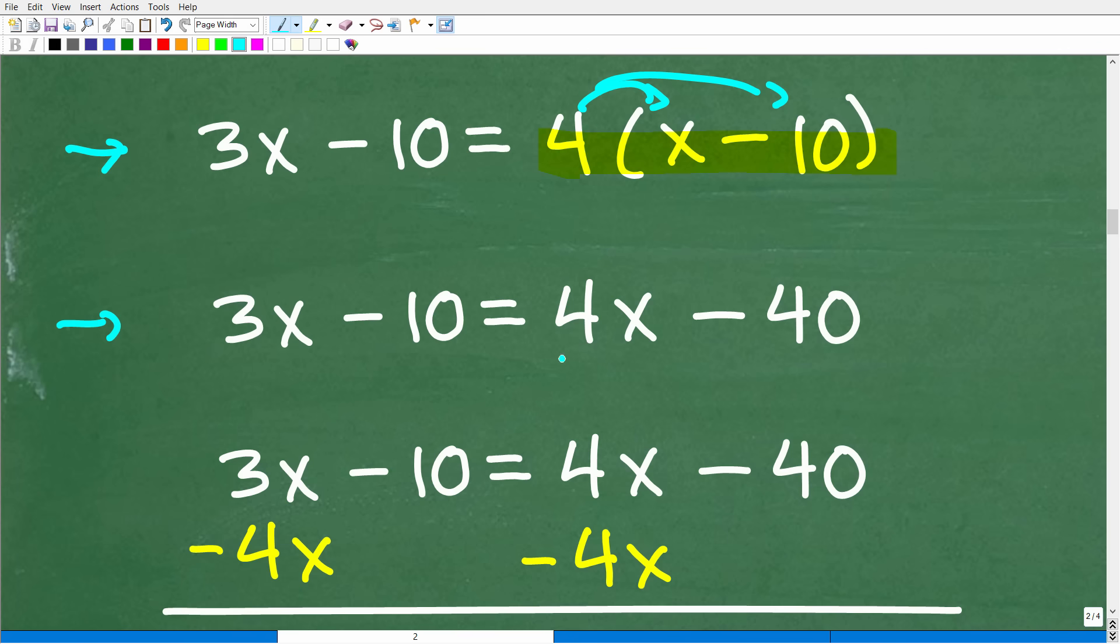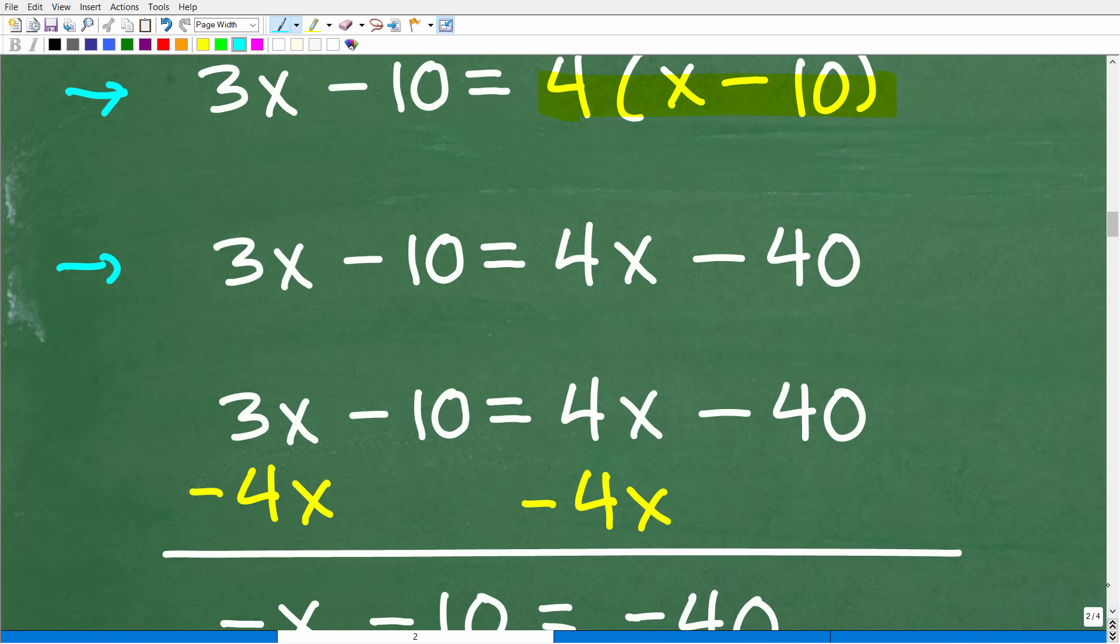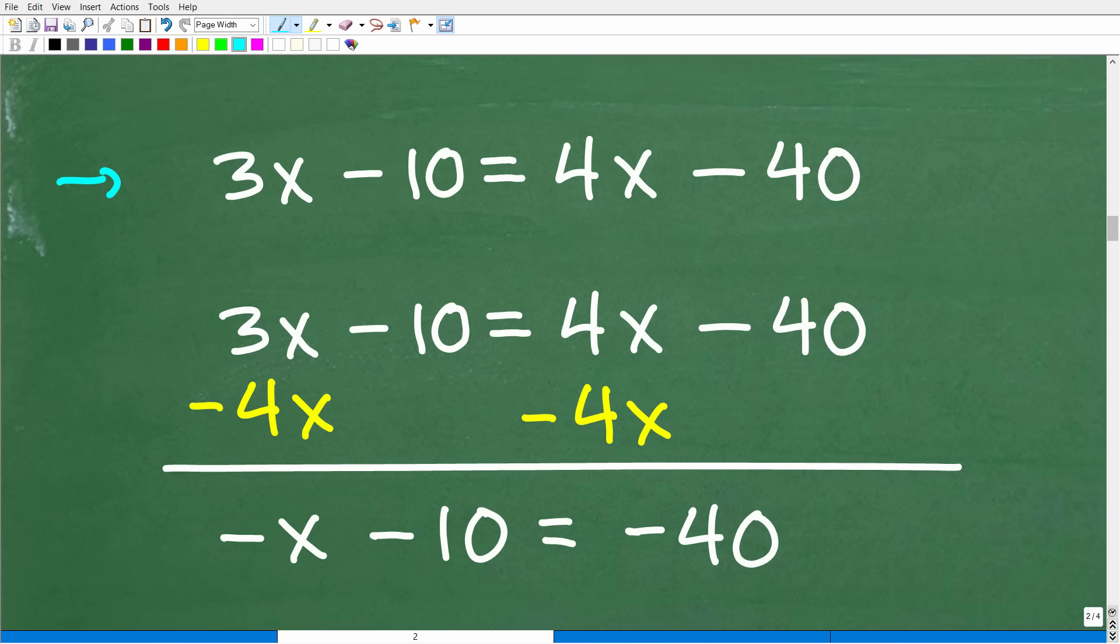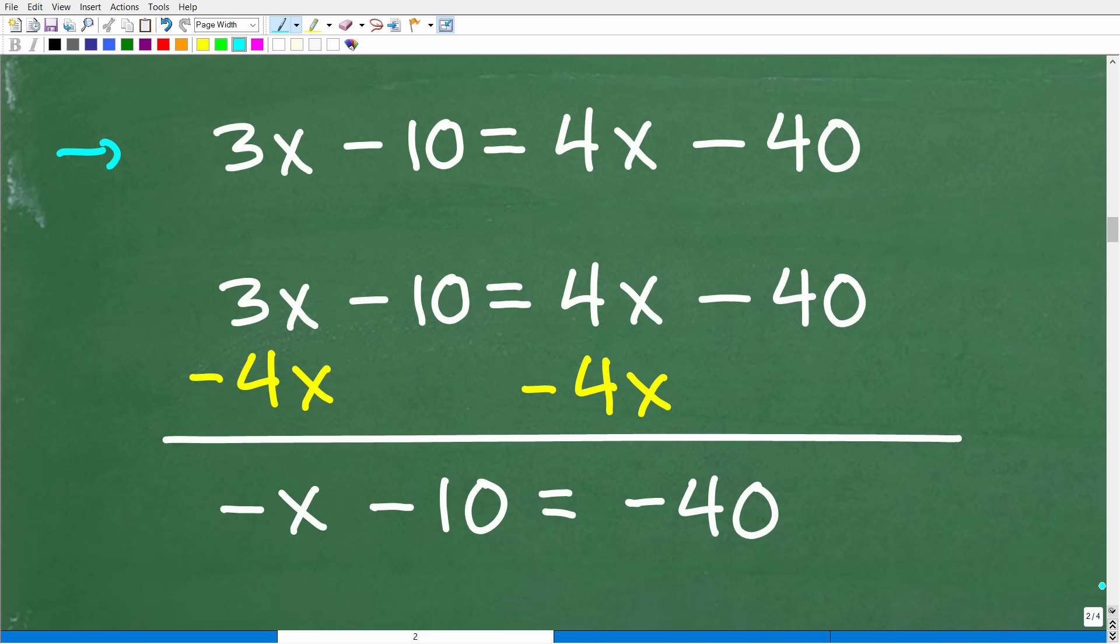So now we have 3x minus 10 is equal to 4x minus 40. And now I'm going to go ahead and subtract 4x from both sides of the equation. What I'm going to be doing is getting all the variables to the left and all our numbers to the right. I don't have to do it this way, but this is probably the way that most people would solve this problem. Okay, so I'm going to subtract 4x from both sides of the equation. Remember the rule in algebra: whatever you do on one side of the equation, you can do whatever you want as long as you do it equally to both sides.